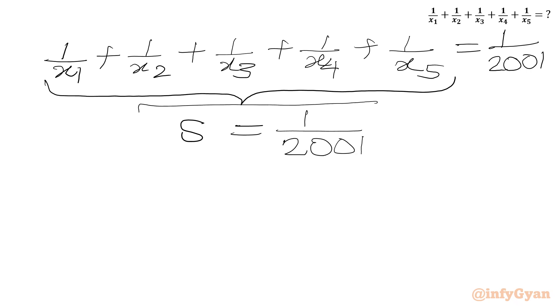So our final answer is S equal to 1 over 2001. I hope friends you will like this video. Thank you so very much for watching. Do not forget to like, share and subscribe. Bye-bye till next video. Good luck. Take care.